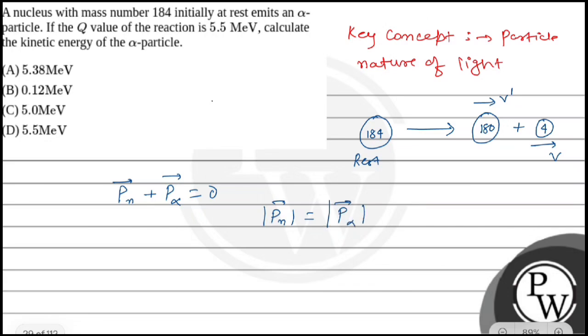From momentum conservation, p_alpha = 4v and p_n = 180v prime. So v prime = 4v/180.